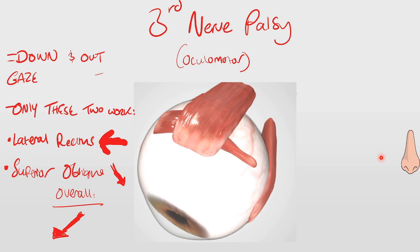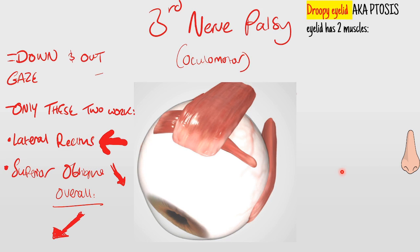There are a couple of other symptoms not directly related to the eye muscles themselves. You also get something called ptosis - it's pronounced ptosis - which means a droopy eyelid.